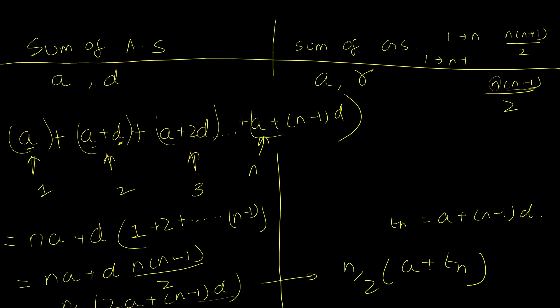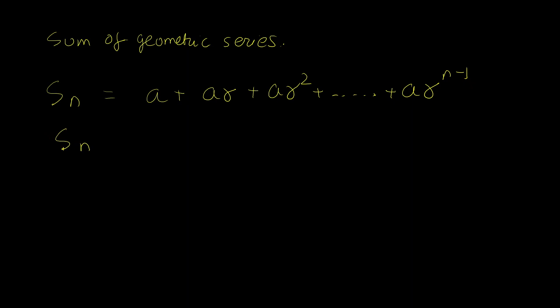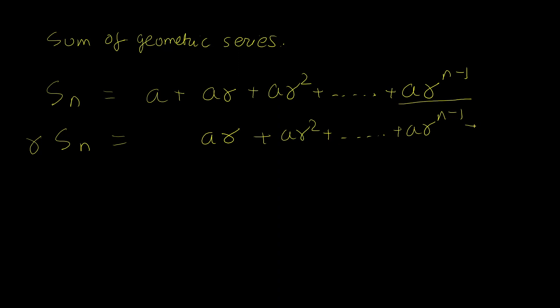For the sum of a geometric series, the terms are a, ar, ar², up to ar^(n−1). To derive the formula, I multiply the entire sum S_n by the ratio r. This shifts every term one position to the right: the first term a becomes ar, ar becomes ar², and so on, generating one extra term ar^n at the end.